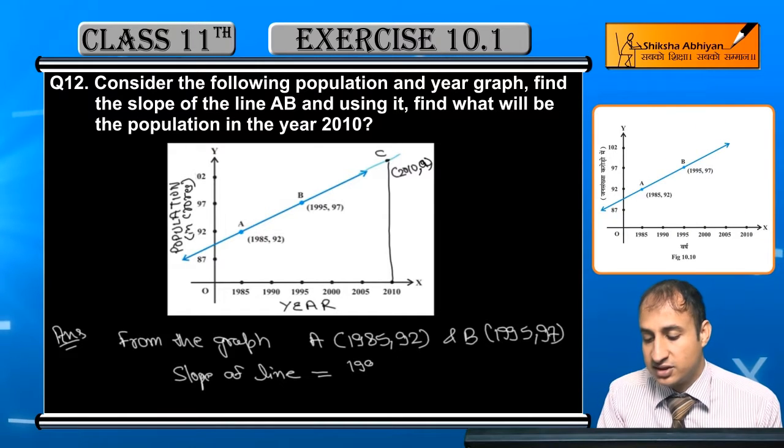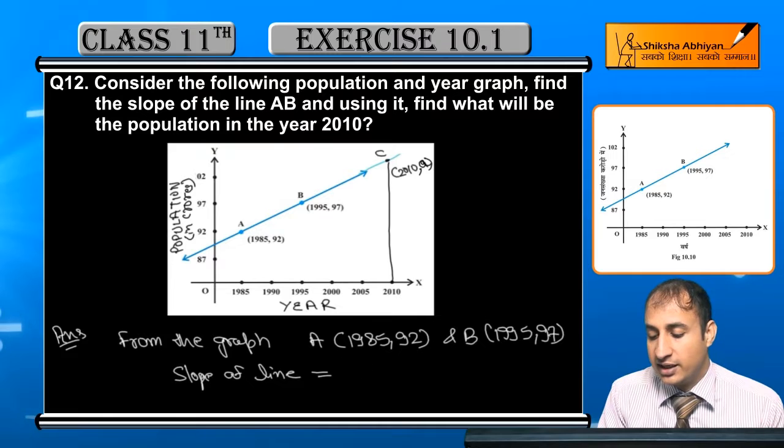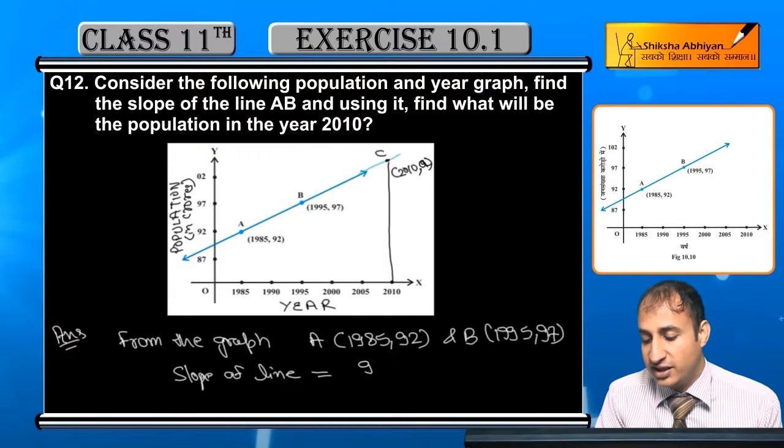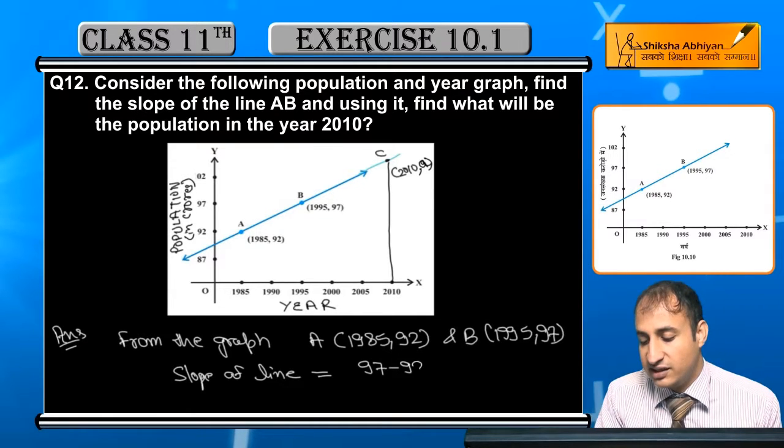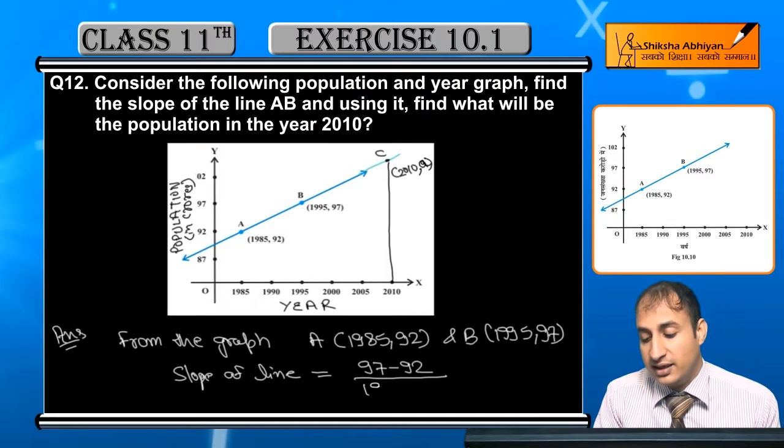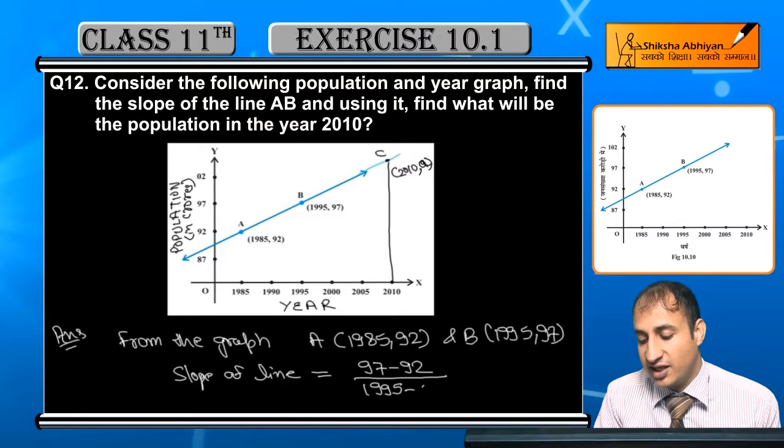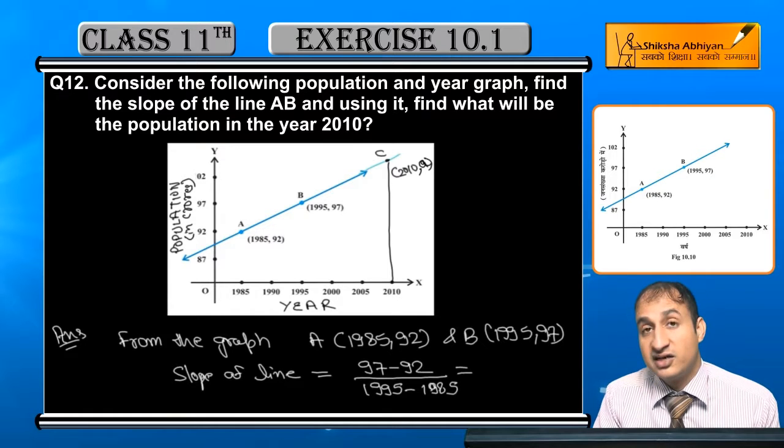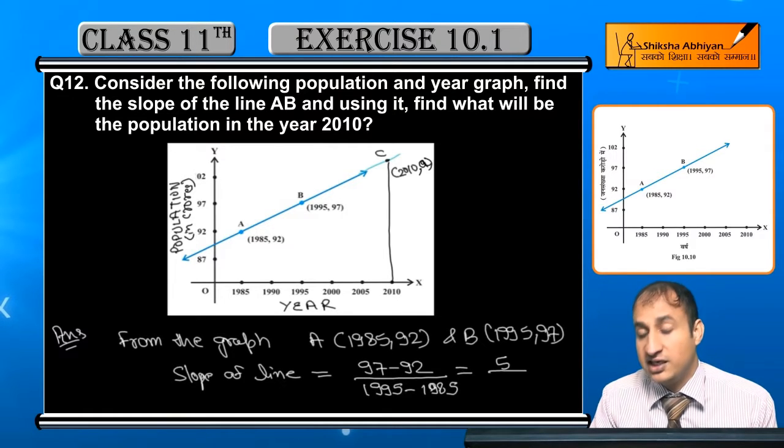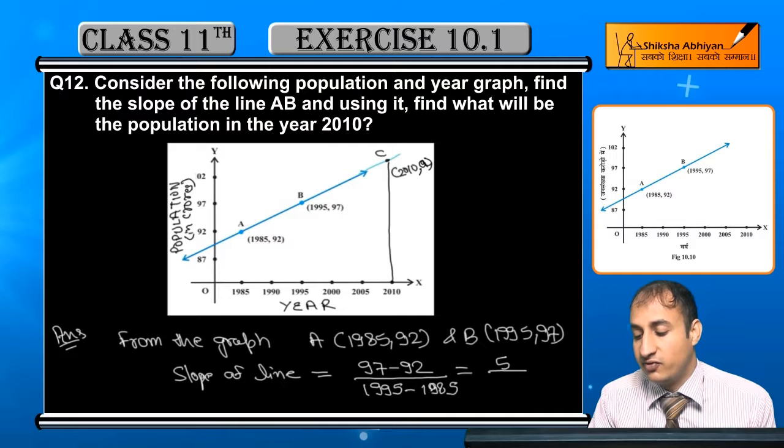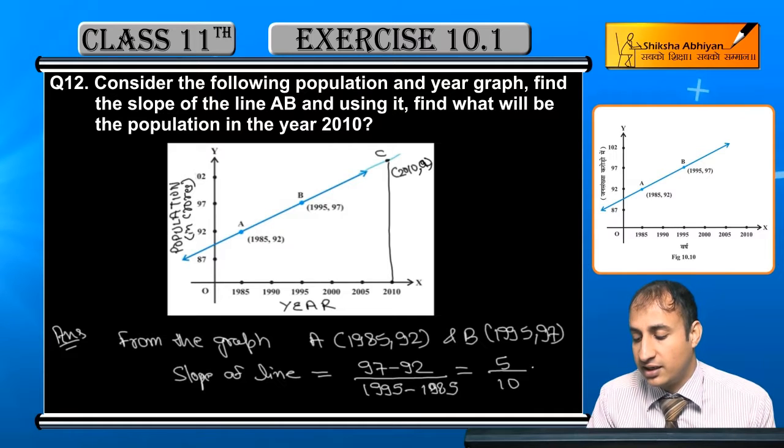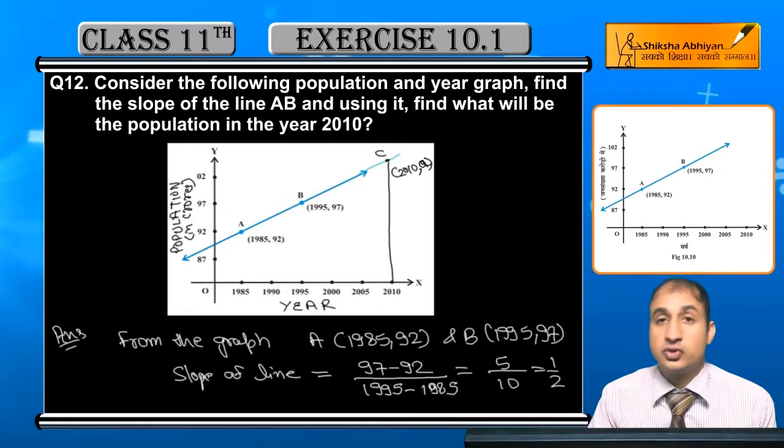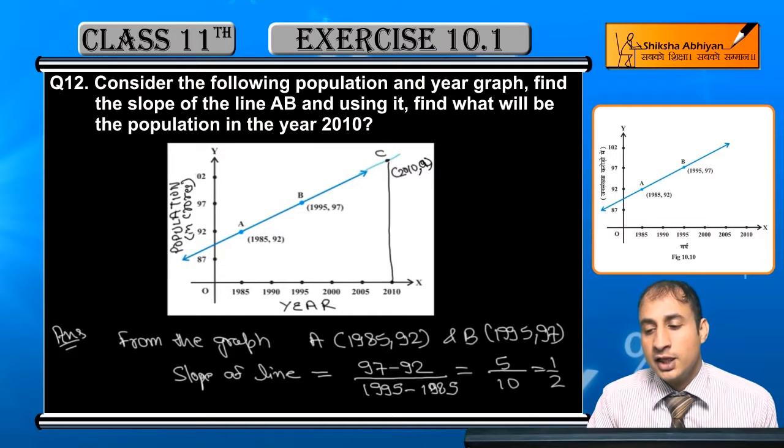So 97 minus 92 upon 1995 minus 1985. Now 97 minus 92 is 5, and 1995 and 1985, the difference is 10. So this is 5/10, which is 1/2. So the slope is 1/2.